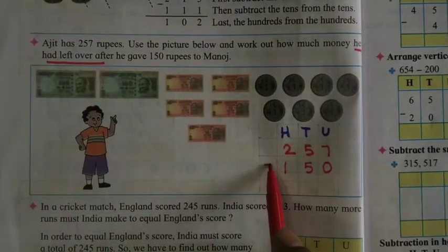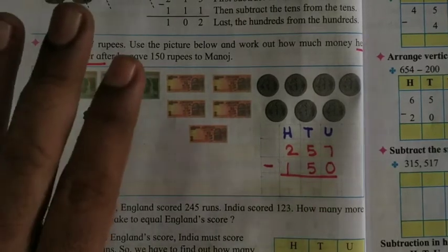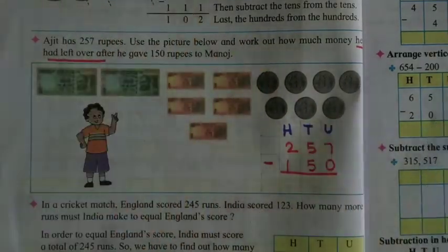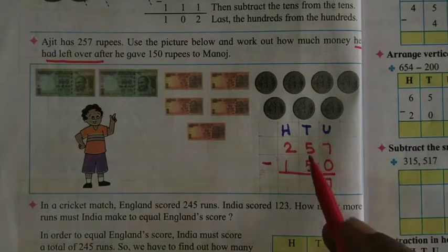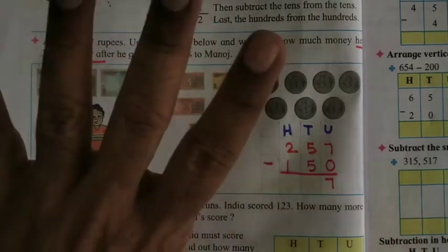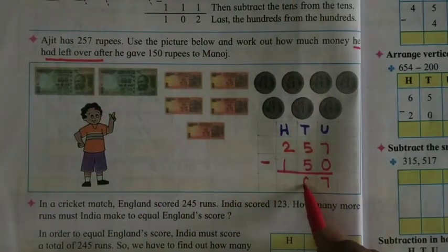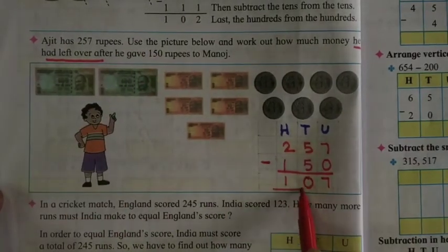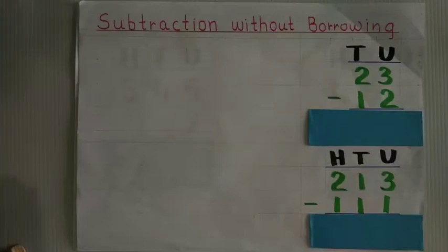Left over means you have to do minus. Solve the sum. 7 minus 0 — 0 means nothing, so 7 is the answer. 5 minus 5 gives 0. And 200 minus 100, so 1 will be left. So 107 rupees will be with Ajit. Let us solve the sums related to this topic.